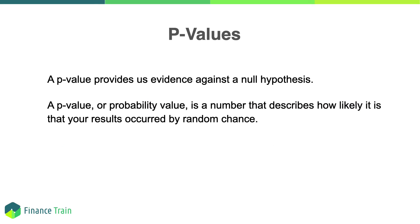P-values are one such tool that can help us determine the statistical significance of the results. P-value provides us with evidence against a null hypothesis. P-value assumes that the null hypothesis is true and the observed difference in the sample was due to sampling error. A p-value, or probability value, is a number that describes how likely it is that your results occurred by random chance.